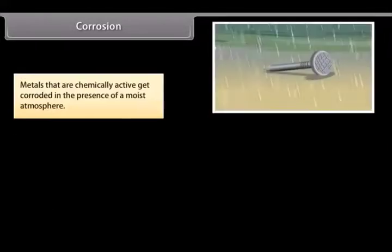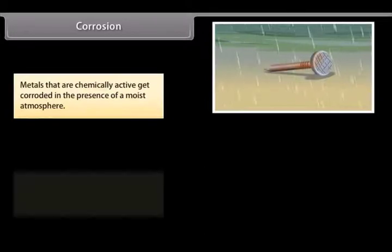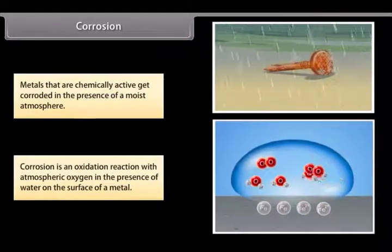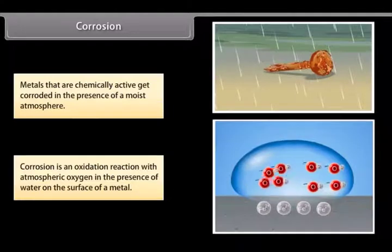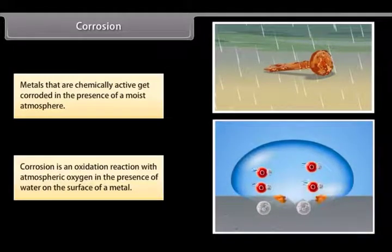Corrosion. Metals that are chemically active get corroded in the presence of a moist atmosphere. Corrosion is an oxidation reaction with atmospheric oxygen in the presence of water on the surface of a metal. For example, iron and aluminium corrode.